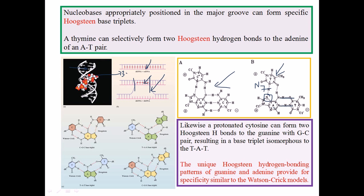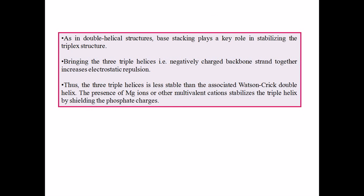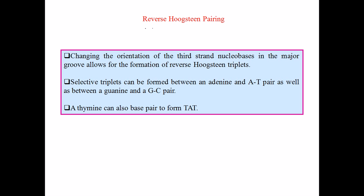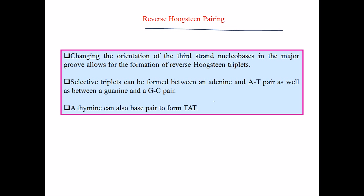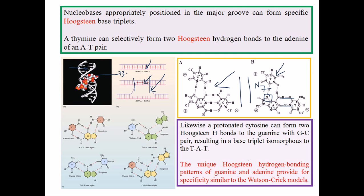Triplex structures are important in many cases. Another type is called reverse Hoogsteen pairing. In standard Hoogsteen pairing, a strand runs 5' to 3' antiparallel to a 3' to 5' strand forming bonds. In reverse Hoogsteen pairing, if we invert those bases, they can still bond with each other, and those bonds are called inverse Hoogsteen base pairing, giving a TAT triplet arrangement.